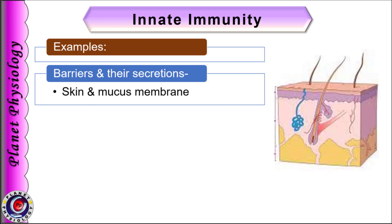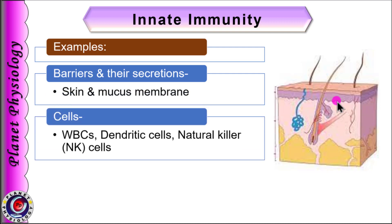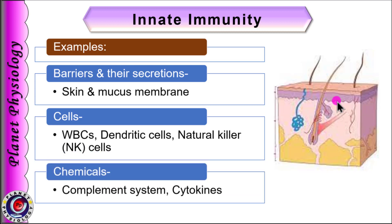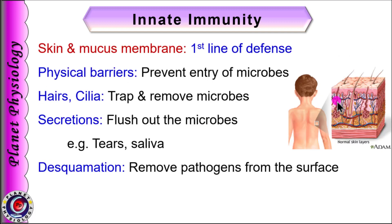The first mechanism is the presence of various anatomical barriers and their secretions, like skin and mucous membrane and their secretions. Then cells like different types of WBCs, dendritic cells and natural killer cells also confer innate immunity. Various chemicals like components of the complement system and various cytokines released by cells are also part of innate immunity. Let us see the first one — the barriers.